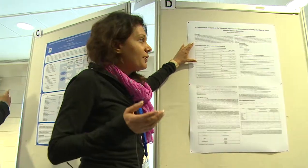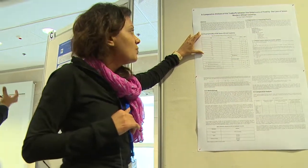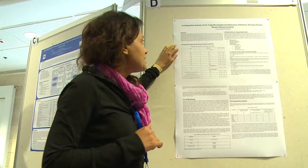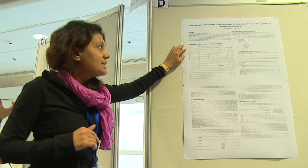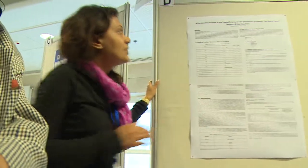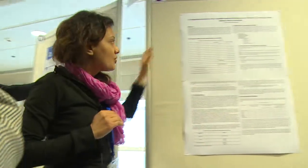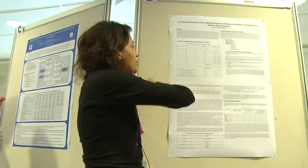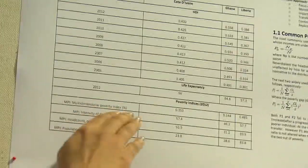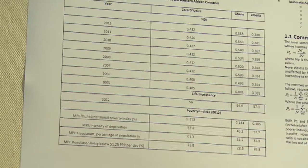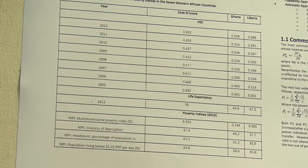A copy of the paper is uploaded on the UN WIDER website. Looking at the HDI indices for the countries, the worst-off country is Mali and the best is Ghana, in terms of all indices. Similarly, looking at the multidimensional poverty indices provided by OPHI, Ghana is better off compared to the six other countries in the dataset.